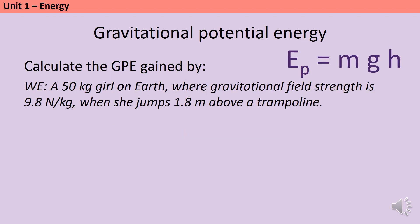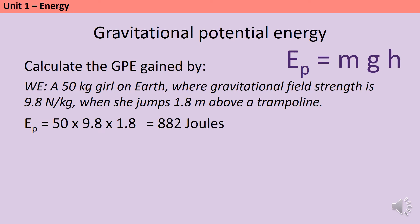So let's look at a worked example of how we would apply this calculation. If we're trying to calculate the gravitational potential energy gained by a 50 kilogram girl on Earth where gravitational field strength is 9.8 newtons per kilogram, when she jumps 1.8 meters into the air above a trampoline, we do mass multiplied by gravitational field strength multiplied by height: 50 × 9.8 × 1.8, which gives us an answer of 882 joules.